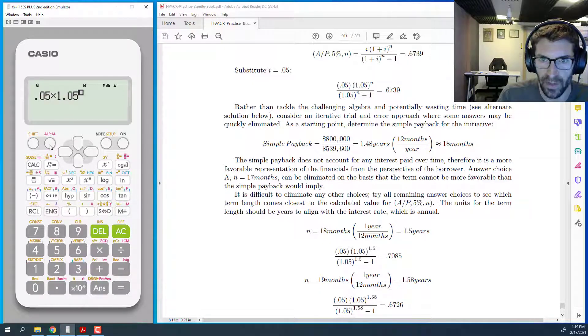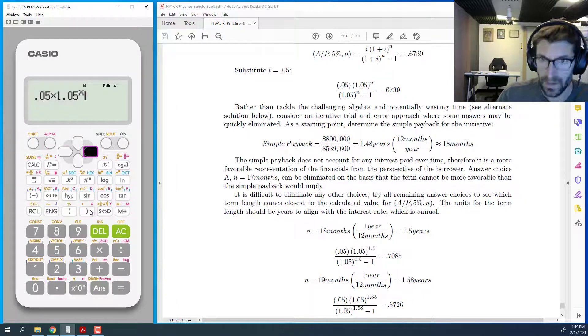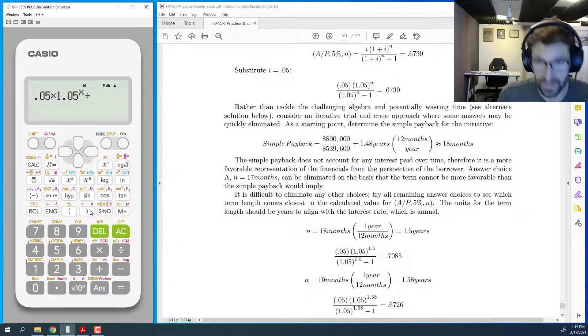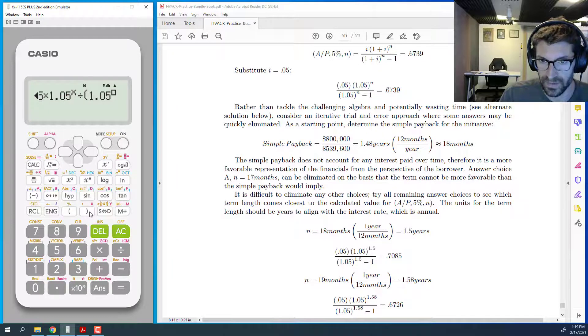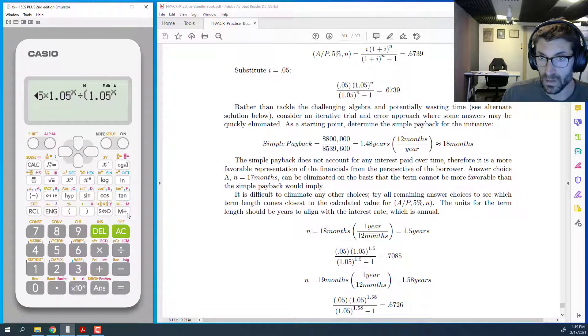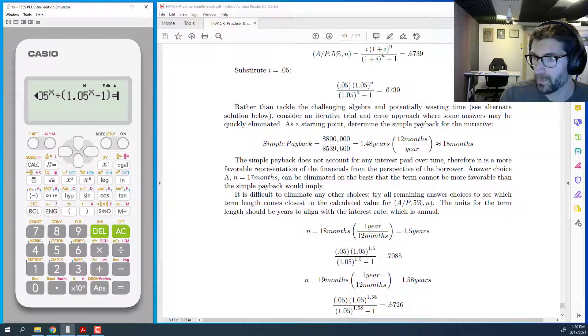So we're going to do 0.05 times 1.05 to the n. So now that's raised to alpha. I'm going to use x instead of n. And then we're dividing that by, and I'm going to use grouping symbols here to keep everything in the bottom together. 1.05 to the x again. 1.05 to the alpha x. Whoops. No more little parentheses. We want alpha x. Minus one. Close parentheses. And that's equal to alpha equal 0.6739.